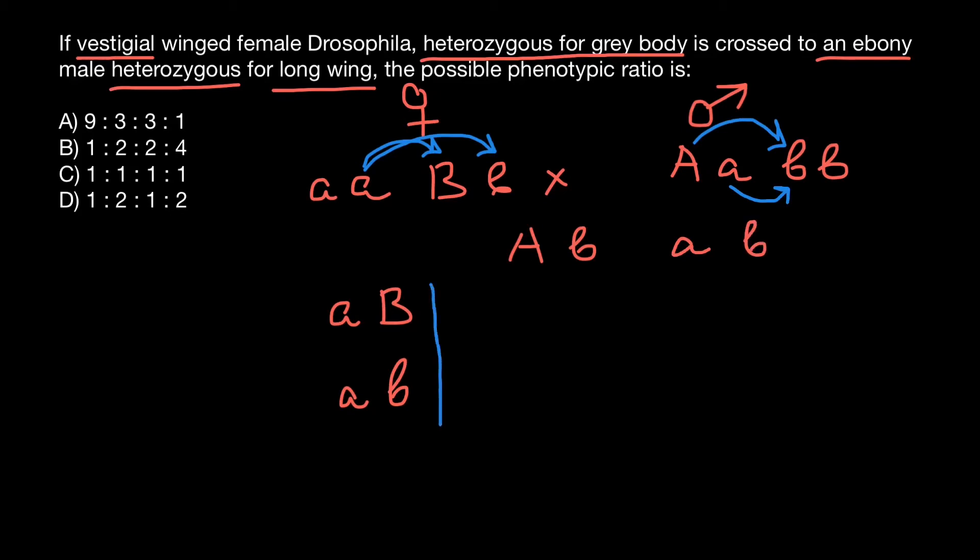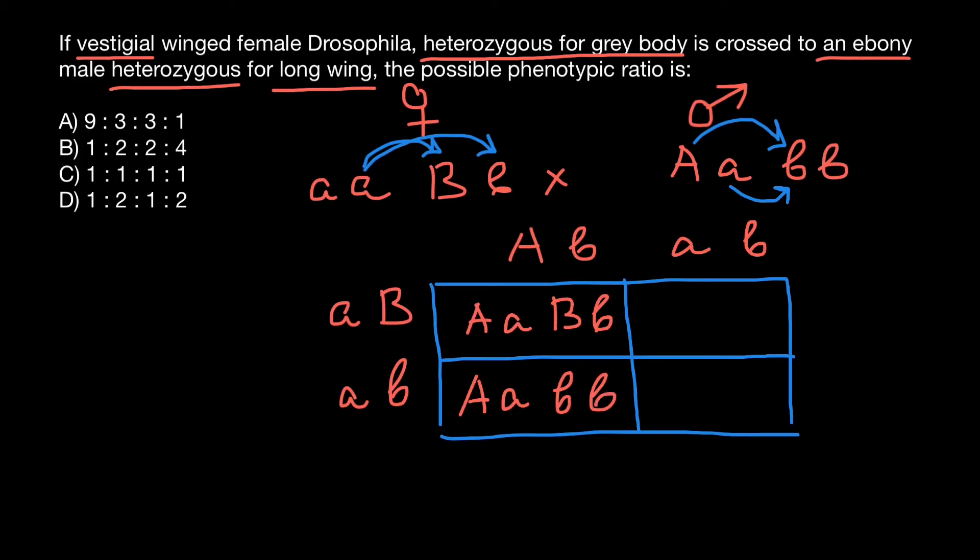Now let's build simple Punnett square and let's find all the probable genotypes and phenotypes in such a cross. So capital A, small a here, capital B, small b here, capital A, small a here, and small b, small b here. Small a, small a here, capital B, small b, and small a, small a here, and small b, small b.